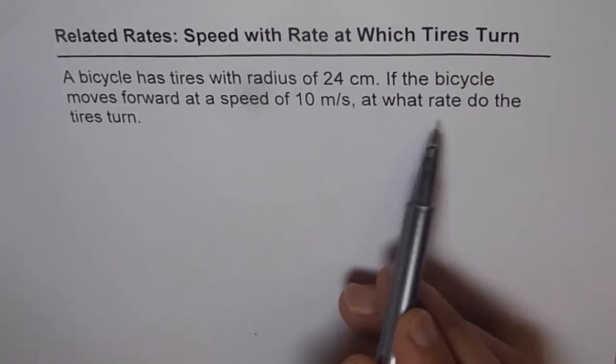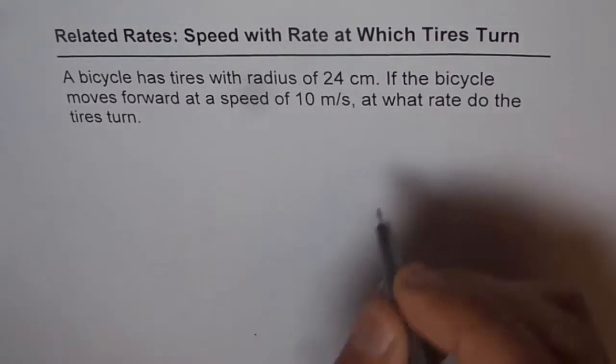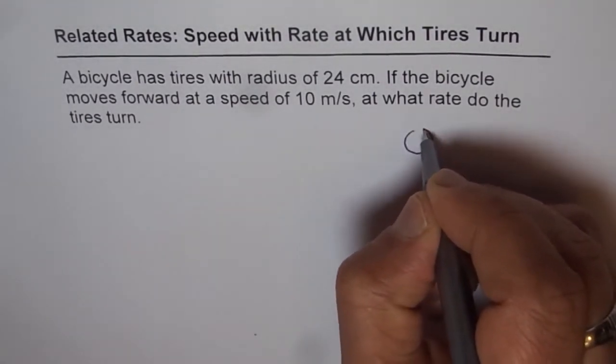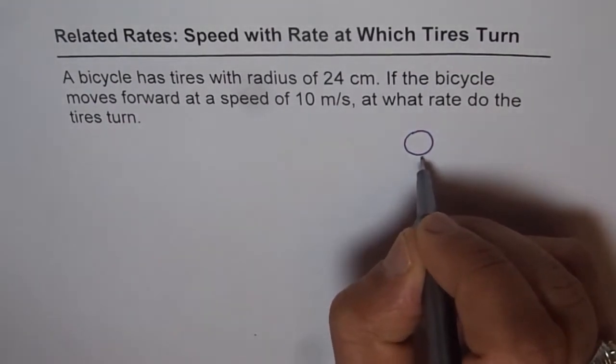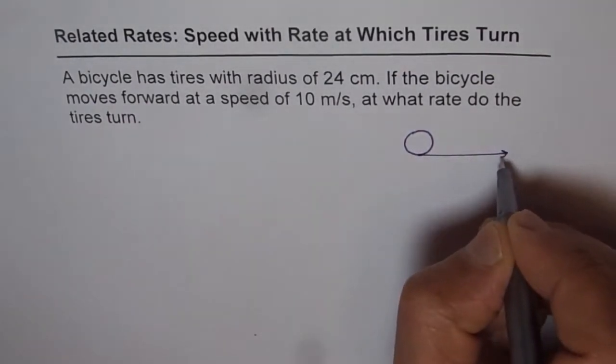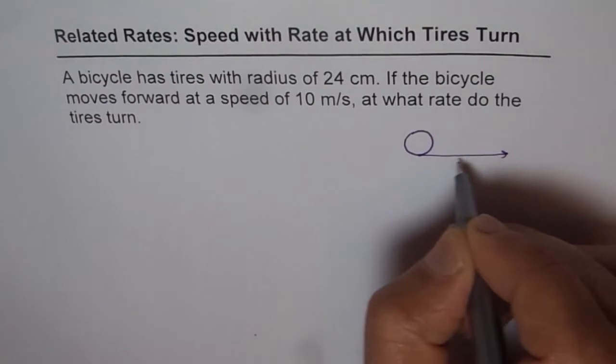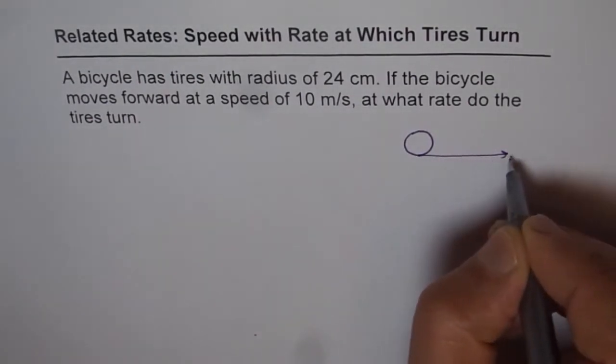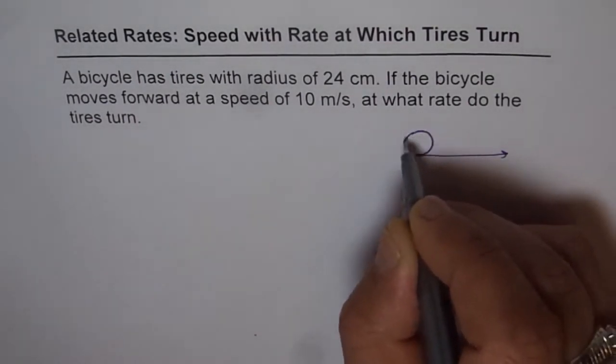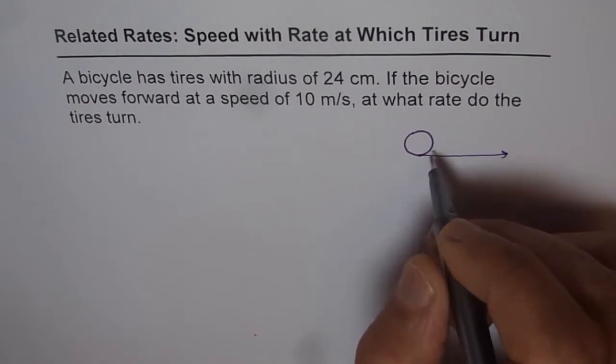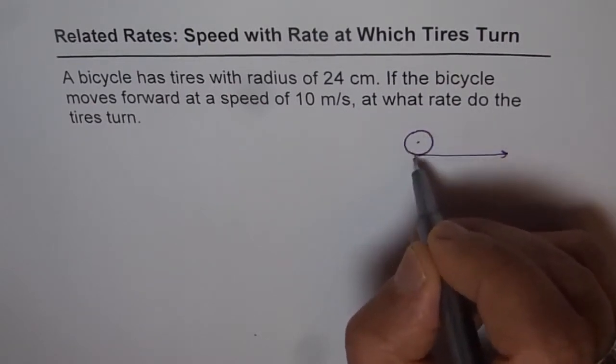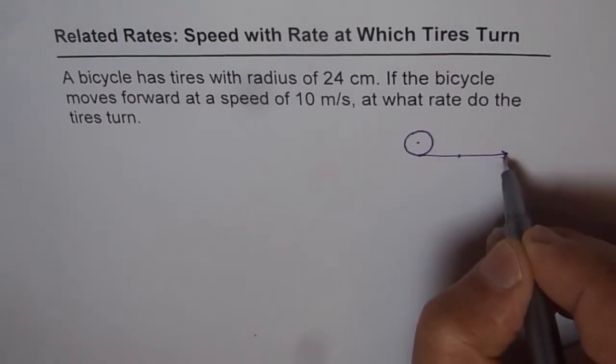Consider this as one of the wheels of the bicycle. As the bicycle moves forward, the wheel turns and both are related. The farther the bicycle moves, the more it turns. With every turn, it moves circumference, 2πr distance away.